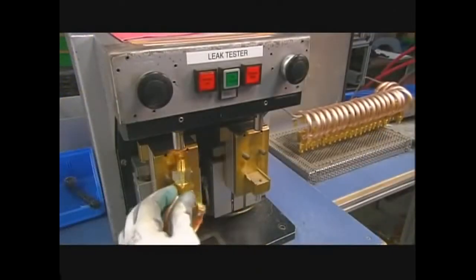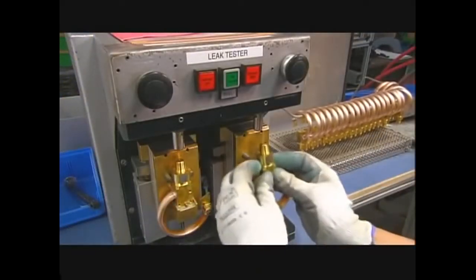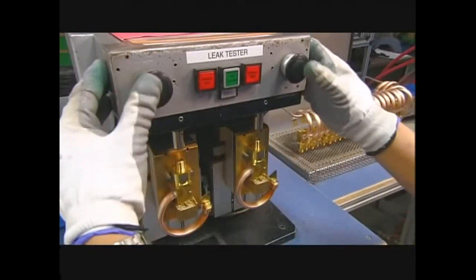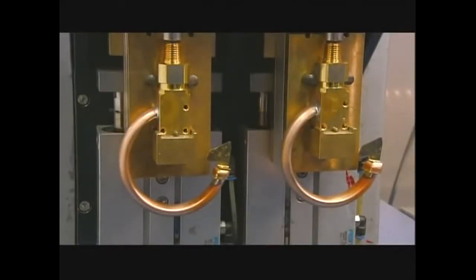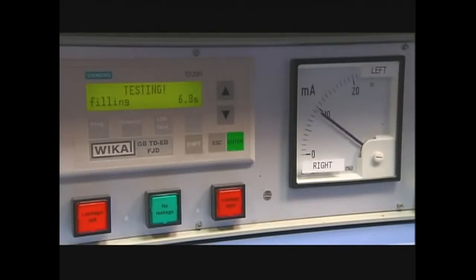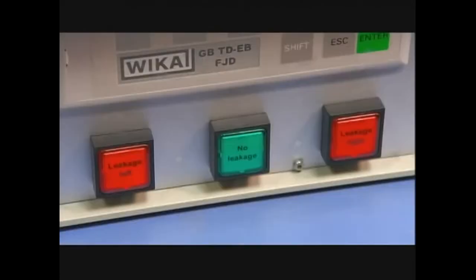The pressure system assemblies then go onto a leak testing machine that pushes air into the tubes. A stable pressure reading indicates there's no leakage.